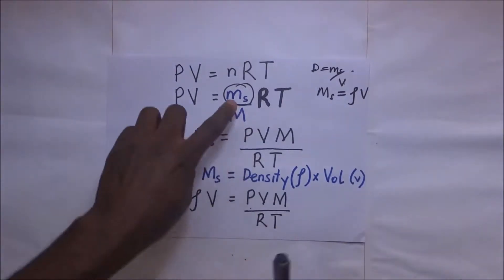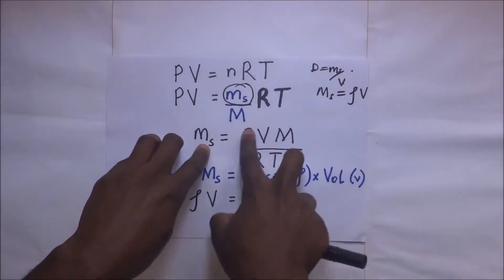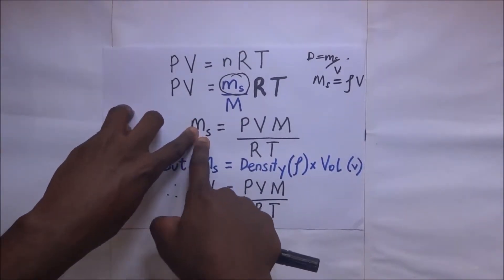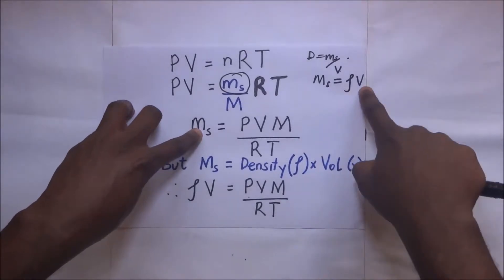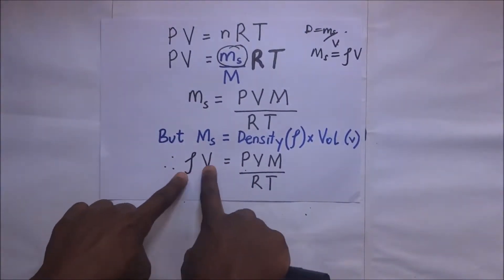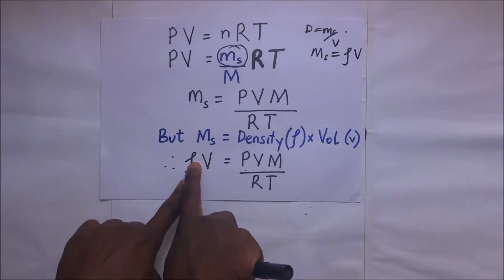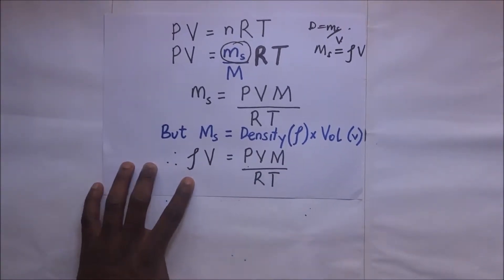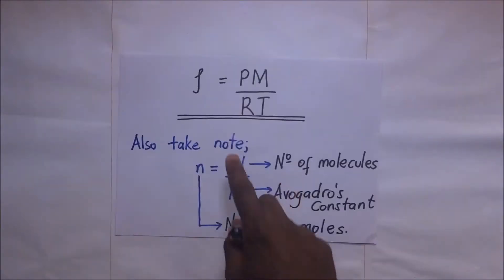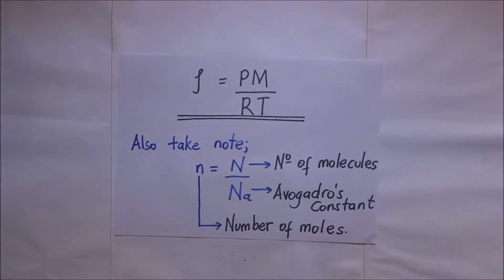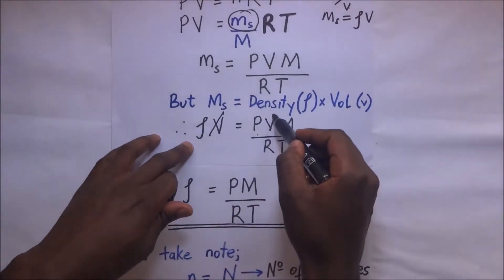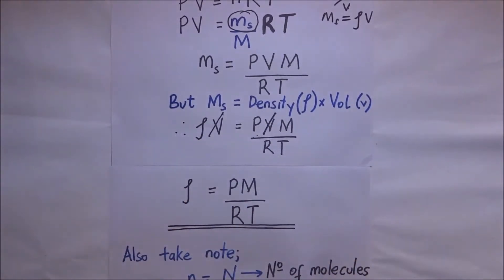Substituting m_s = ρV into the equation, we break the mass down as density times volume. Making density the subject of the formula, the volume V cancels, and we end up with the expression for density of one mole of an ideal gas: ρ = PM / RT.